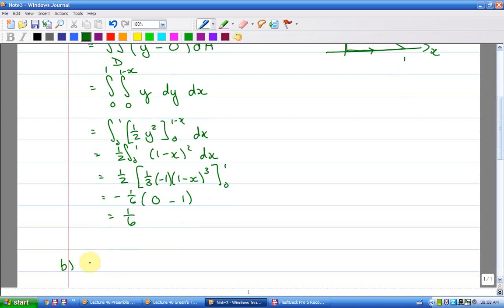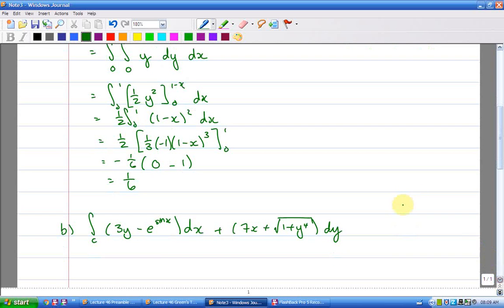What's the next one? The next one is this thing. 3y minus e to the sine x. And already I'm thinking oh my goodness doing this as a line integral would not be nice. No matter what the curve is. Plus 7x plus oh my goodness look at the square root. What is the curve? It's that circle over there. Circle of radius 3. Centered on the origin. Okay, I'm going to call the region inside d.